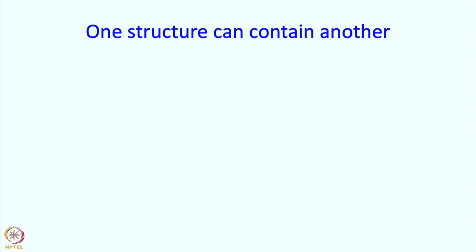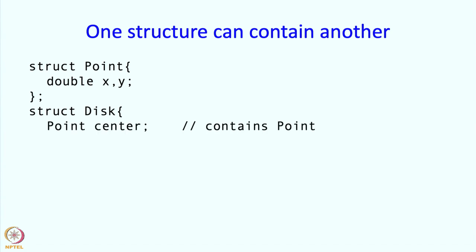Now one structure can contain another. For example, we might have a structure point which contains the coordinates of the point. And now if I want to define a structure disk, it would be natural to have the center being defined as a point.